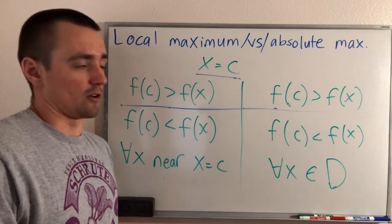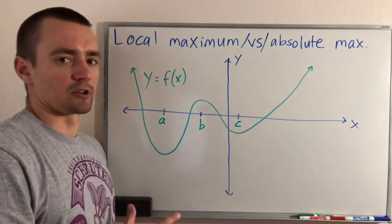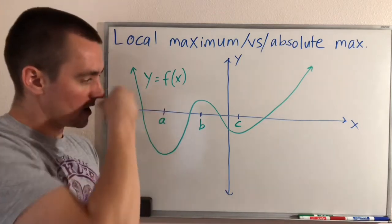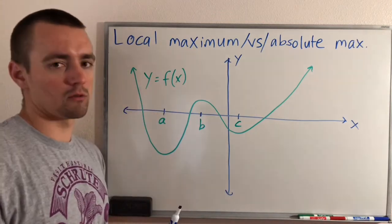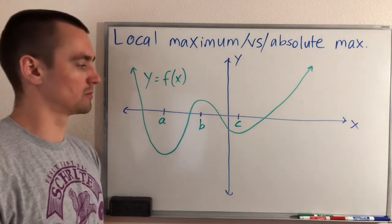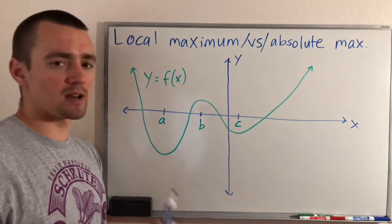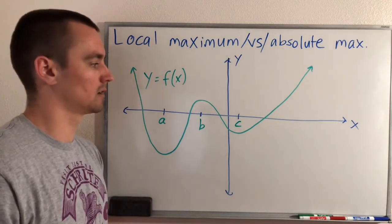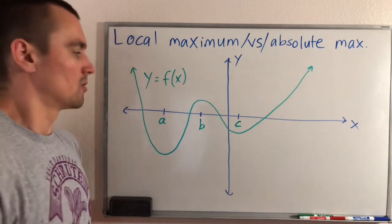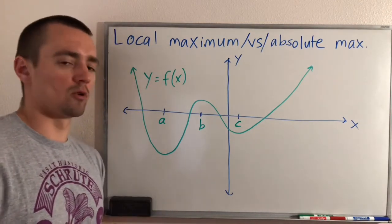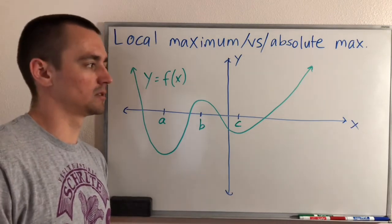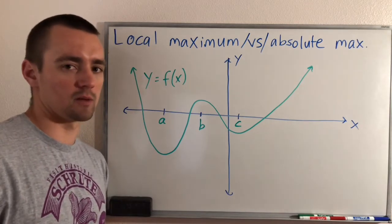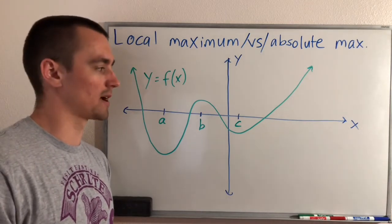So let's think about what this looks like on a graph. Let's consider the graph of this function here — this green curve is our function f of x. We want to think about all the different local and global maximums and minimums. There may not be all of those in every function, but let's talk about what they look like in this example. When thinking about global maxes and mins, it's usually easier to think about the relative or local ones first, because those are the same kind of points you're considering for global max and min values.